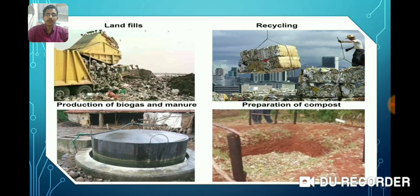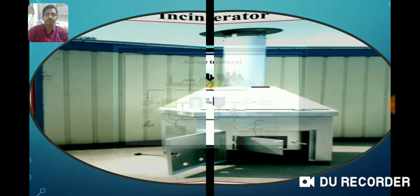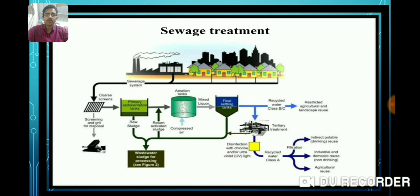On screen you can see pictures of landfills, recycling, production of biogas in a biogas plant, and preparation of compost in fields. This is a picture of an incinerator — a device used to burn non-biodegradable substances and hospital waste. This is the picture of a sewage treatment plant which treats our sewage, converts it into harmless substances, and separates water from it.